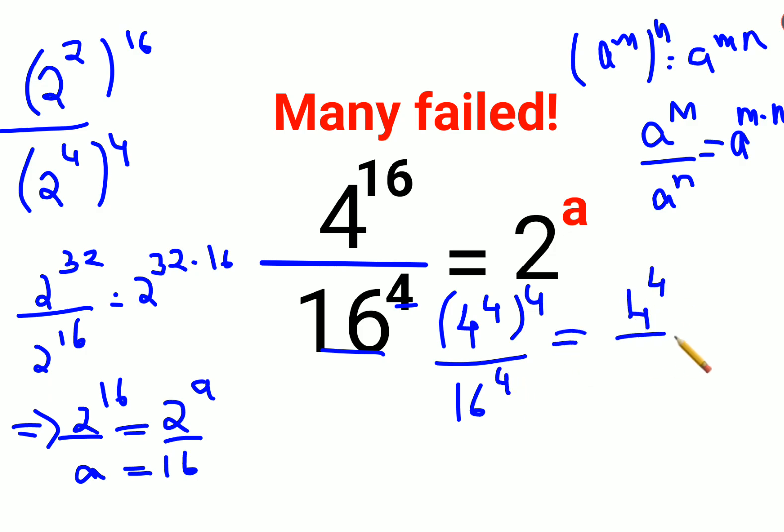The whole raised to 4, because the indices are the same. So this eventually gets you 4 times 4 times 4 times 4 upon 16, and everything is still raised to 4.